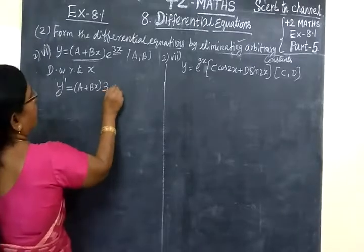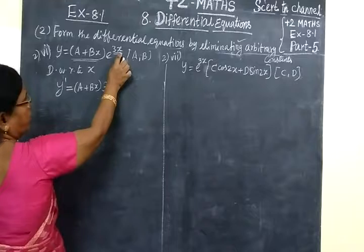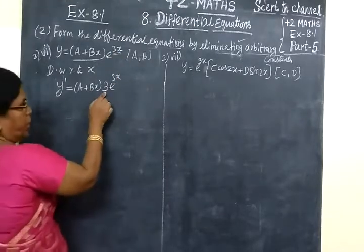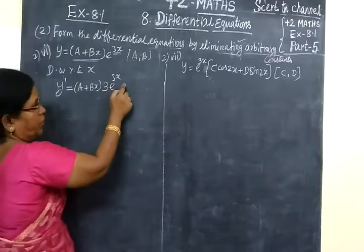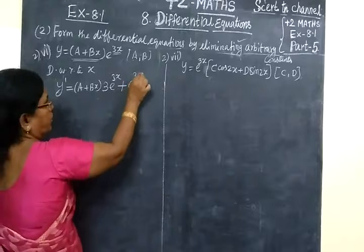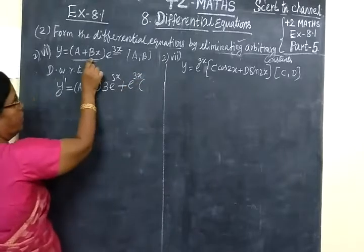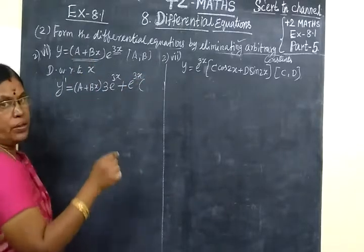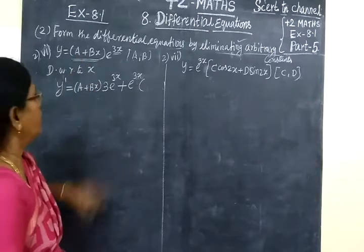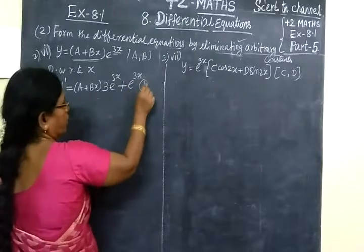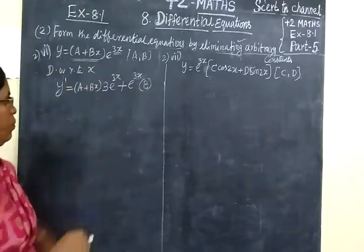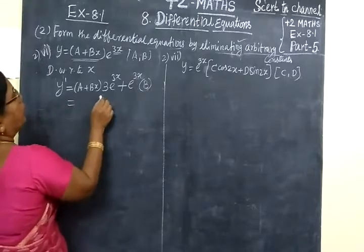Differentiation of the second function gives 3e^(3x), because differentiating e^(3x) brings down 3. Into 3 — every term follows. Plus second function into differentiation of first function: A differentiates to 0 because it is a constant. Bx differentiates to B, so we get B into 1 equals B.